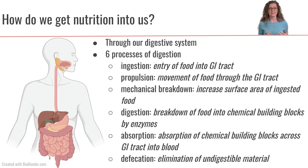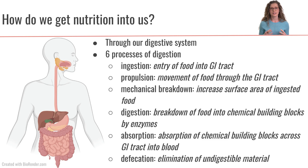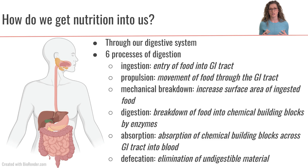There are six different processes that are part of digestion. The first is ingestion, or the entry of food into the GI tract. The next is propulsion, which is movement through the GI tract. The third is mechanical breakdown, a really important step where we take the whole big food and break it down into smaller pieces to increase the surface area of the food. That leads to the next step, which is digestion — the actual chemical breakdown of the food into its individual building blocks, taking these big macronutrients and breaking them down into individual building blocks that we can actually absorb.